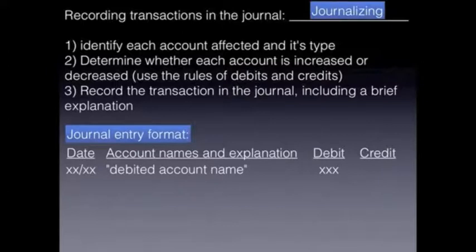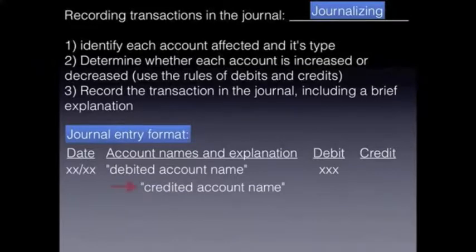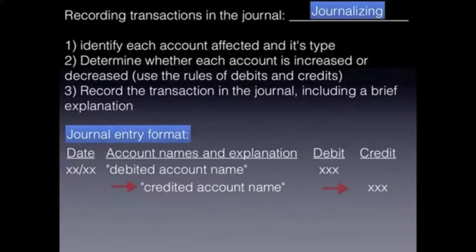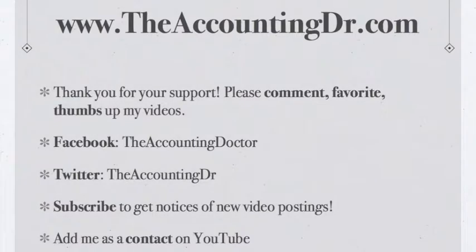Remember there's always a debit and always a credit because we want our debits to equal our credits. We list our credited account name, and notice that it's indented just a little bit. The credited account name is always indented on that second line, as well as the dollar amount. If we had a compound entry — meaning there's more than one debit and or more than one credit — we always list all the debits first and then we list our credits.